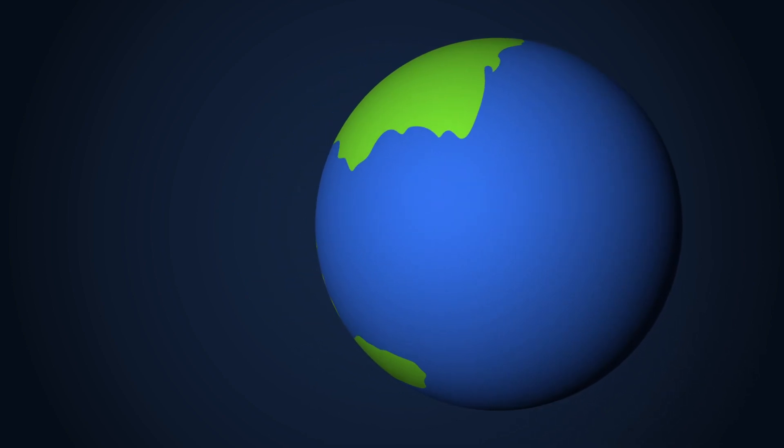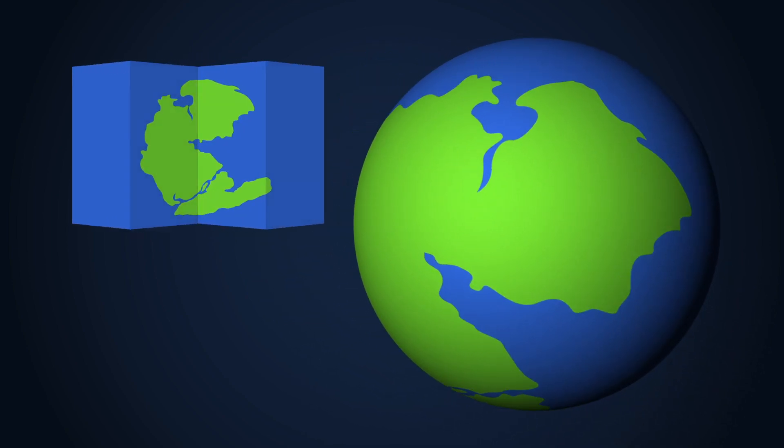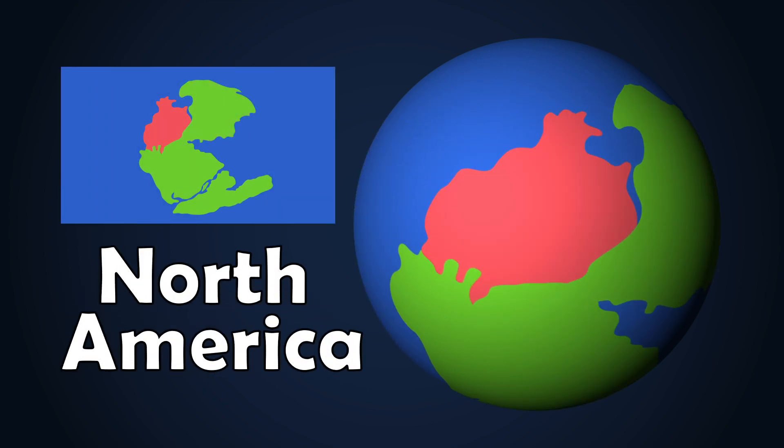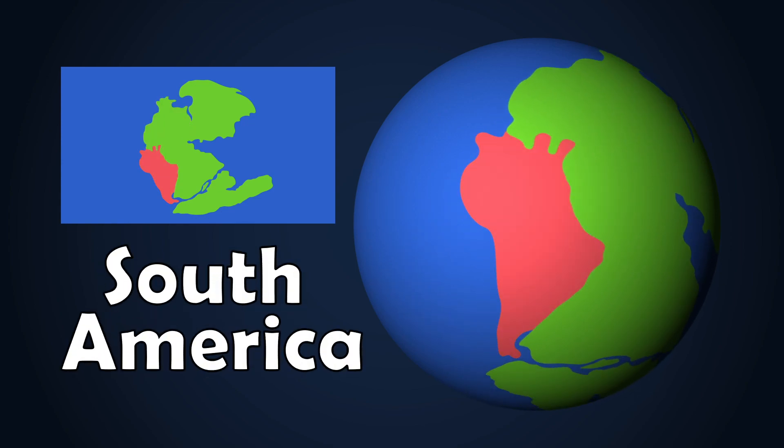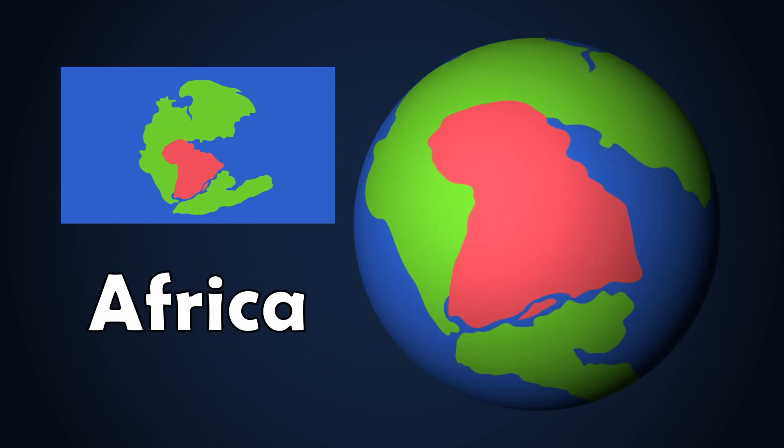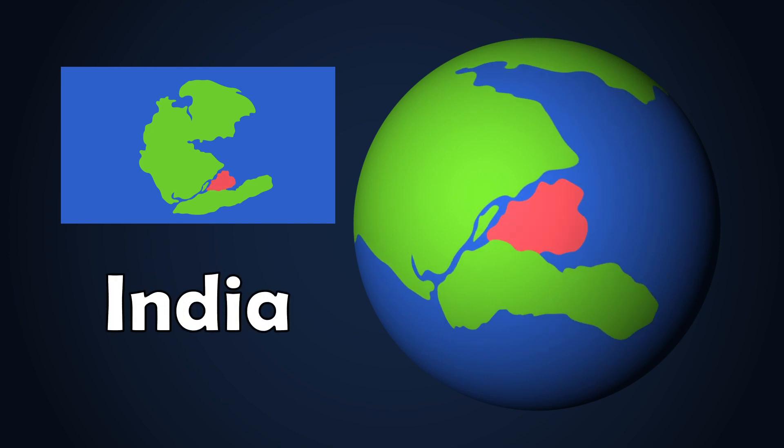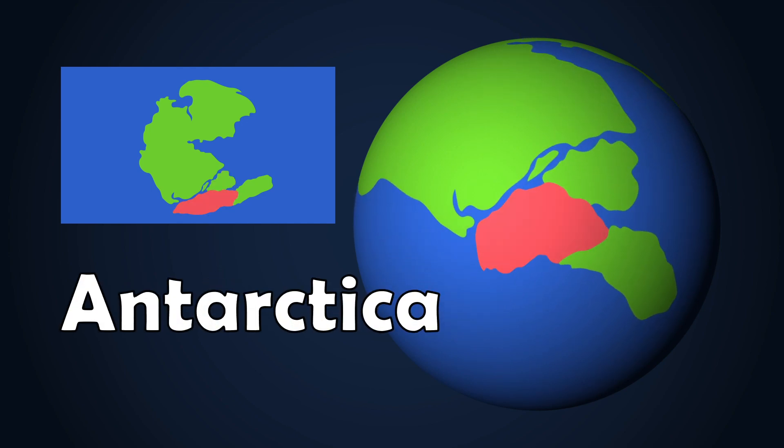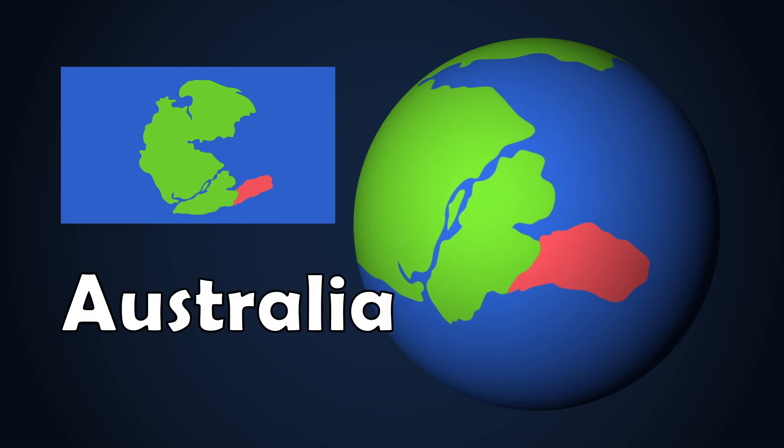Pangea was composed of a number of areas, named in part to what landmasses they would eventually form. These areas were named Eurasia, North America, South America, Africa, India, Antarctica, and Australia.